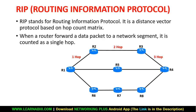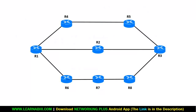Let's see how RIP works in a computer network. For example, there are eight routers connected to the network where Router 1 wants to send data to Router 3. If the network is configured with RIP, it will choose the route with the least number of hops. Here we have three possible routes — Route 1, Route 2, and Route 3. RIP will choose Route 2 because it has only two hop counts, whereas Route 1 has three and Route 3 has four hop counts.